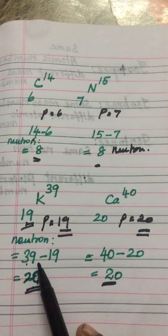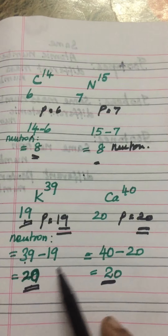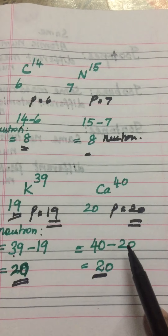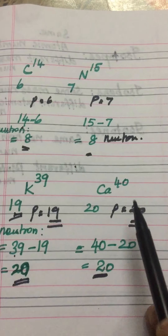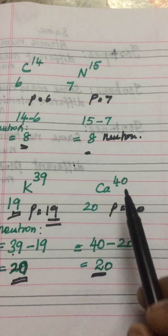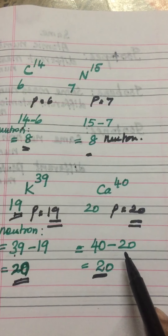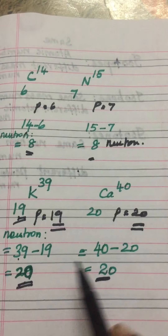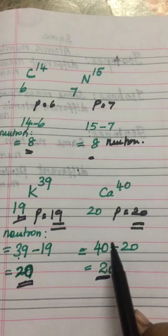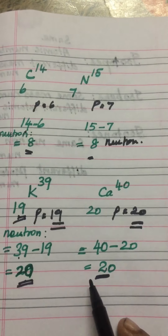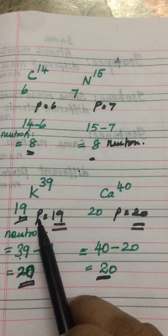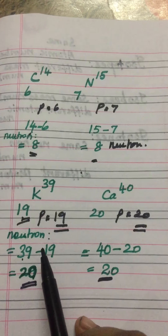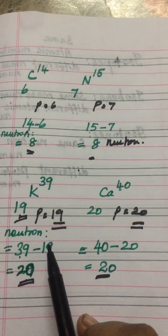So 39 minus 19 is equal to 20, giving potassium a neutron value of 20. For calcium, subtract the proton value from the mass number: 40 minus 20 is 20. So both elements have the same neutron value but different proton values. This is also an example of isotones.